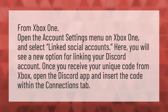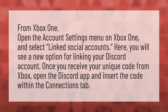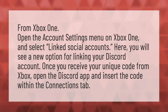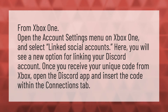From Xbox One, open the Account Settings menu and select Linked Social Accounts. Here, you will see a new option for linking your Discord account. Once you receive your unique code from Xbox, open the Discord app and insert the code within the Connections tab.